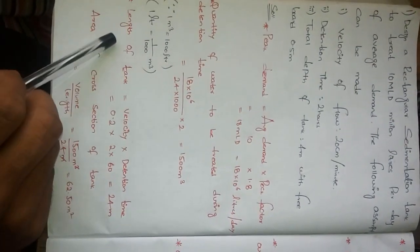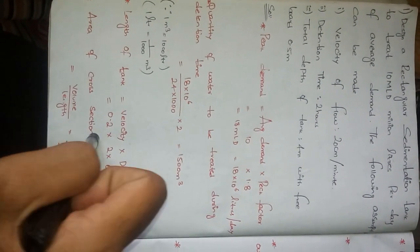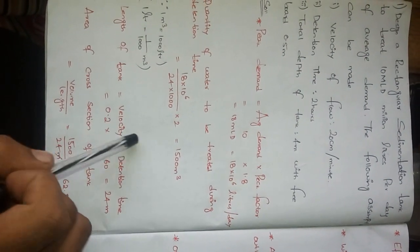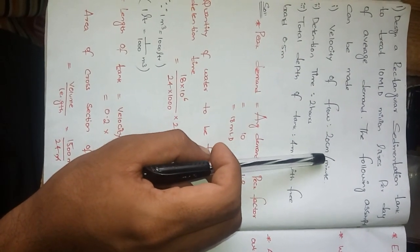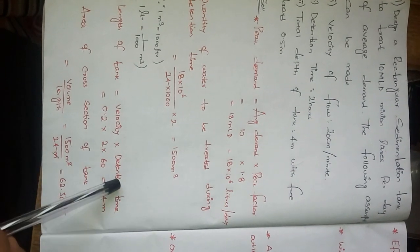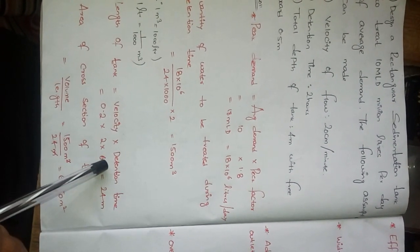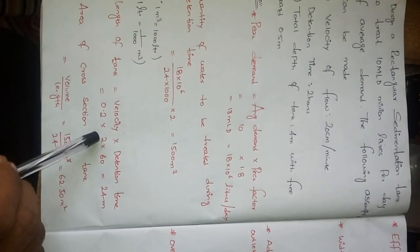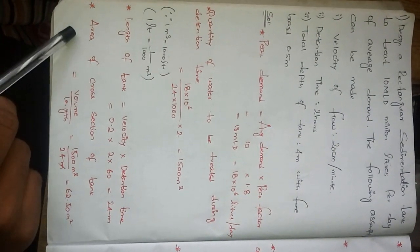Next we have to calculate length of tank, which is velocity times detention time. What is the velocity? It's given as 20 centimeters. We have to convert this 20 centimeters into meters, which is 0.2 meters. Detention time is 2 hours. Why are we taking 60? Because 1 hour equals 60 minutes. So 0.2 × 2 × 60 gives us 24 meters.